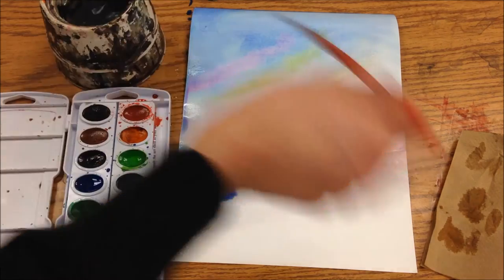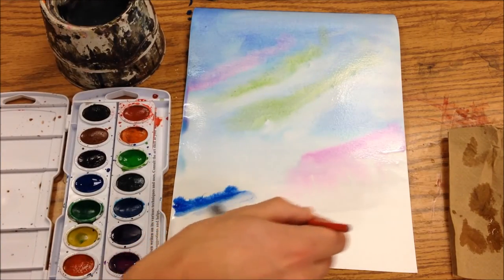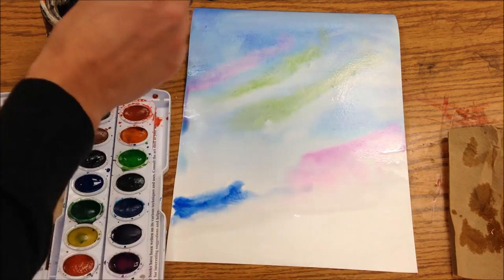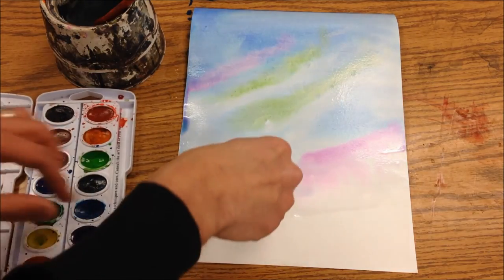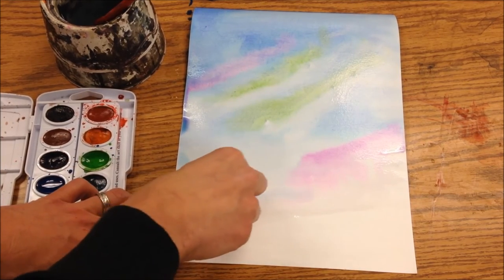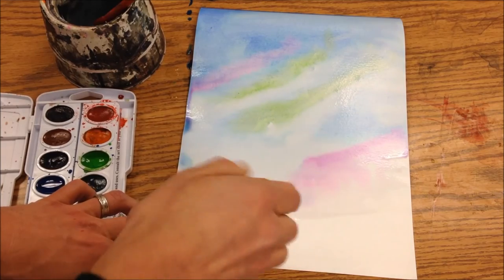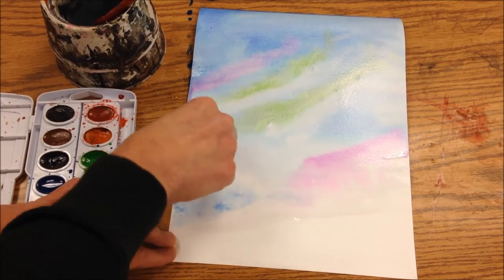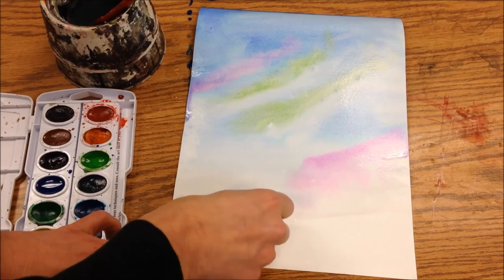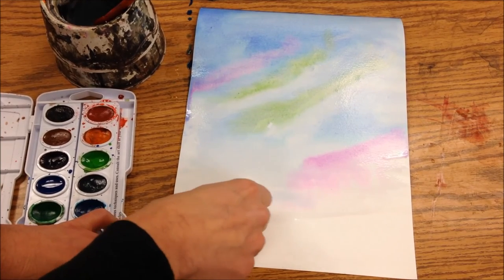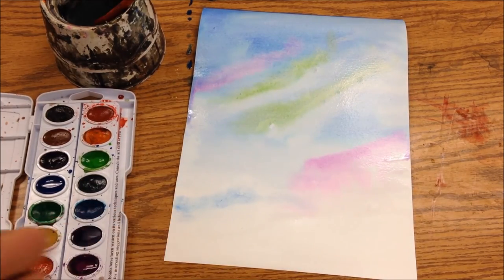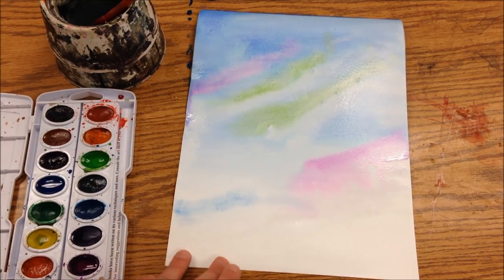Now that got way too dark too fast. So what I'm going to do is just take that, move that over, and just dab at it with this paper towel. I'm not scrubbing, I'm just dabbing at it. All right, we'll come in and add some mountains in there later.